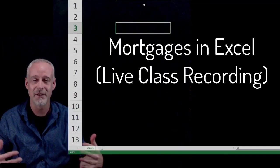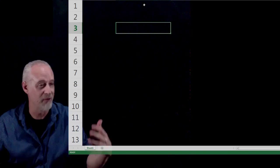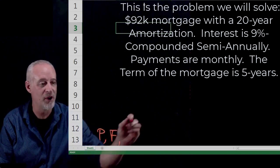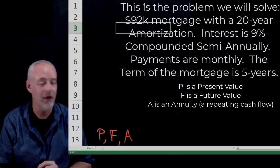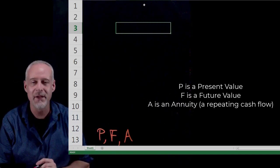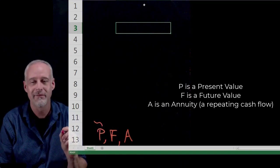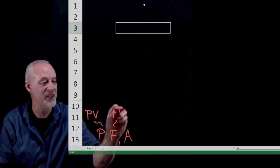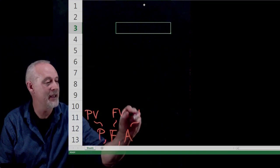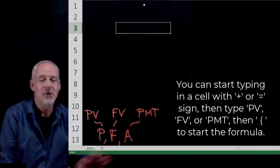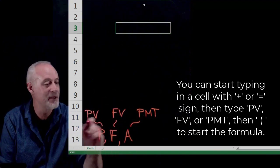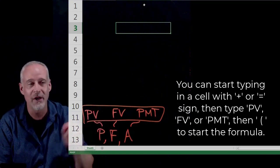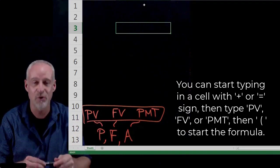A couple of things that we've learned in this course that are sort of jargony terms. We know what a P is, we know an F, we know an A. And in Excel, we can calculate these things with commands.